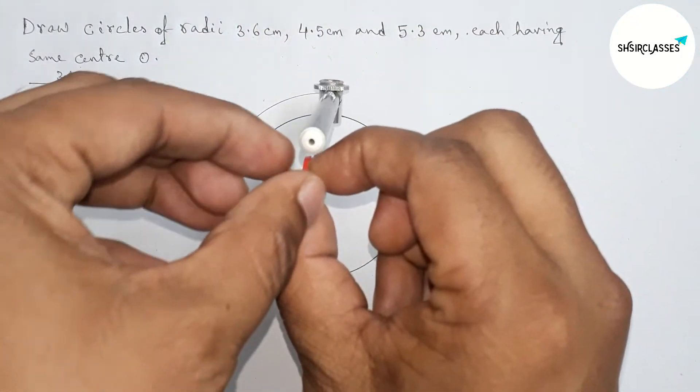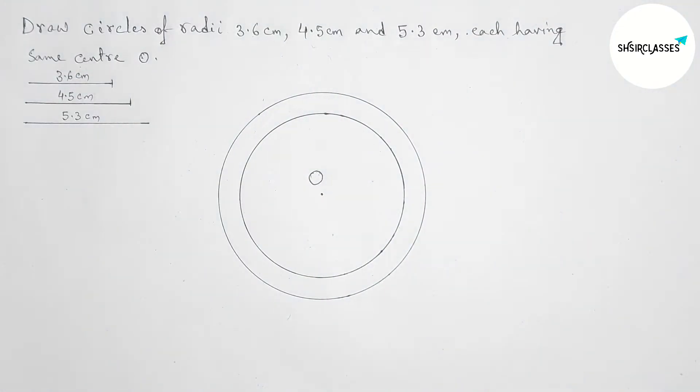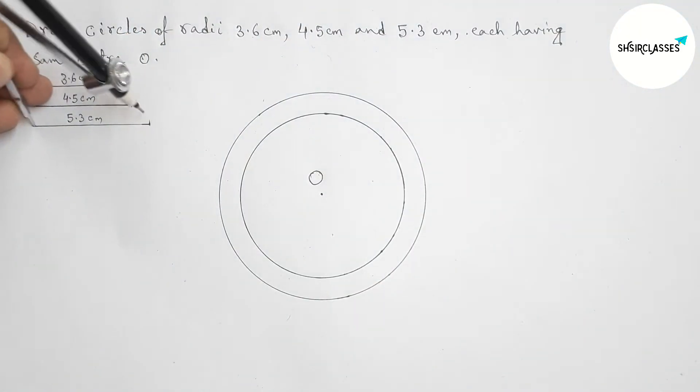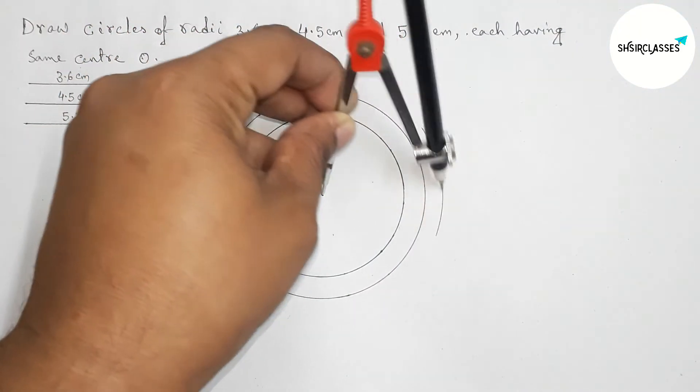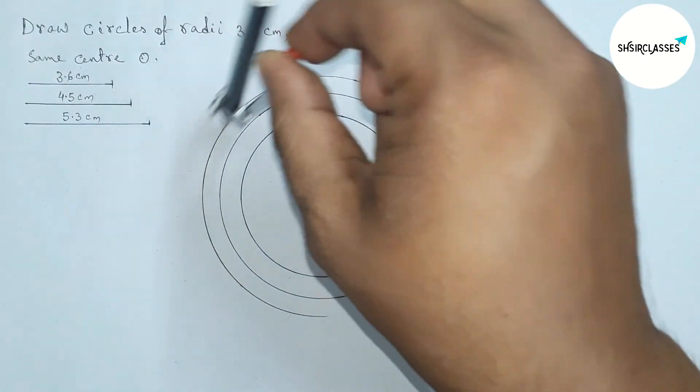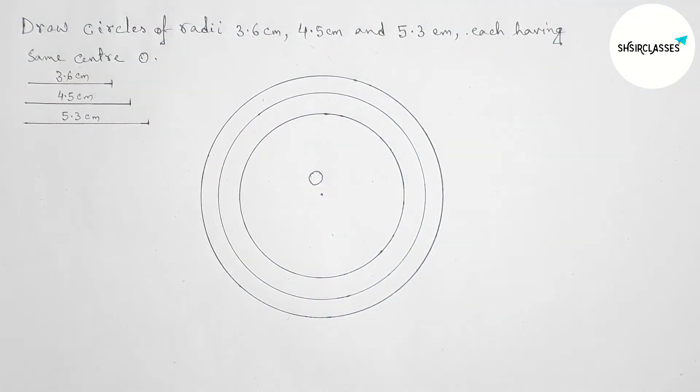Next, taking 5.3 centimeters. Now putting the compass on point O and drawing the third circle. This is perfect.